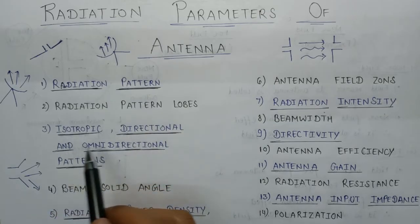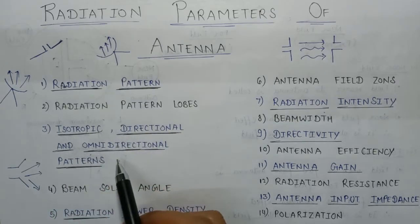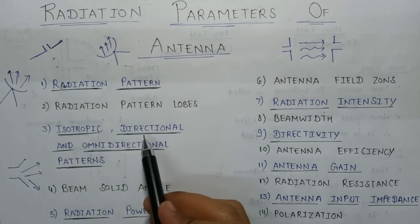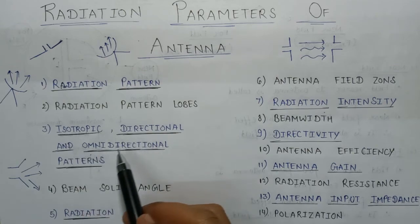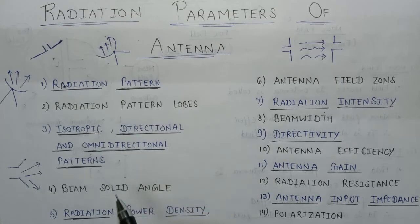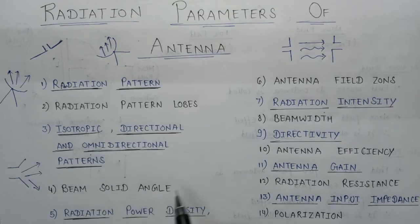In the third lecture we will talk about three types of antenna: isotropic antenna, directional antenna, and omnidirectional antenna. In the fourth lecture we will talk about beam solid angle, or what we can call the beam area of an antenna.